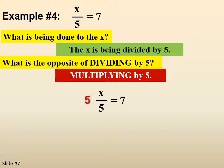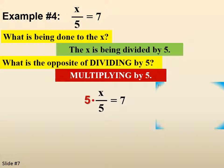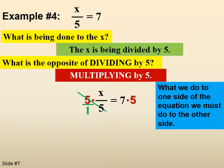So we're going to multiply the left side by 5. And again, we're going to multiply the right side by 5. Make the 5 on the left look like a fraction so I can clearly see the 5 on top and the 5 on bottom that cancels. And we end up with x equals 35.